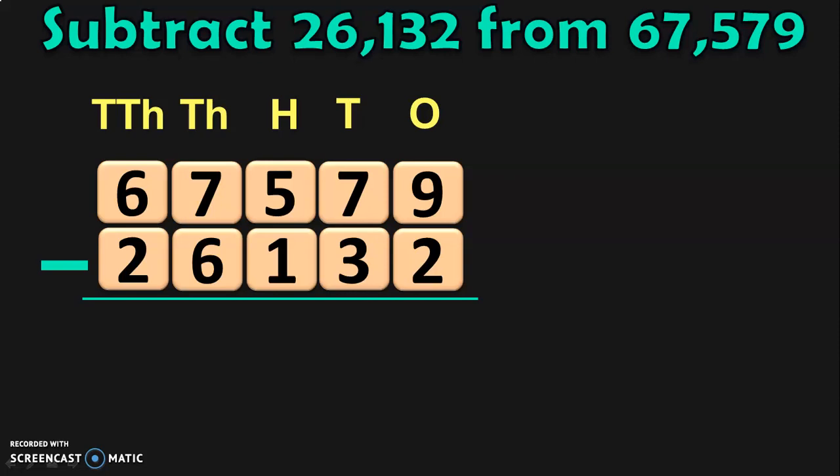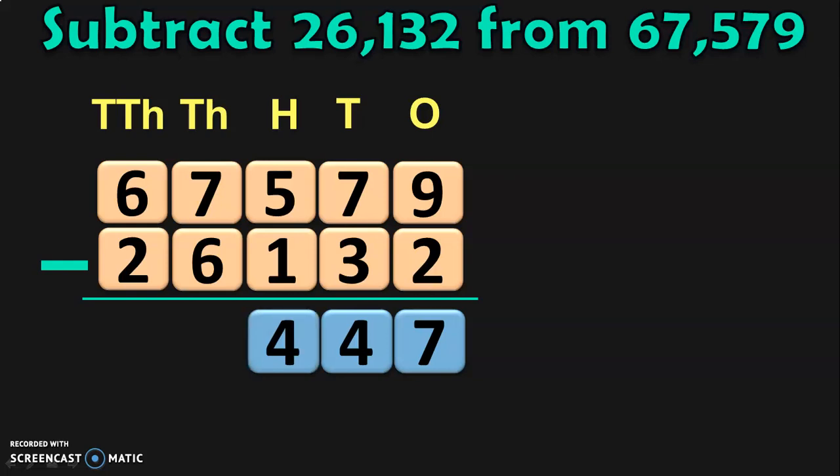In the ones place, we have 9 minus 2. 9 minus 2 is 7. Next, move on to the tens place. 7 minus 3 is 4. Next, move on to the hundreds place. 5 minus 1 is 4. Next, move to the thousands place where you have 7 minus 6. 7 minus 6 is 1.